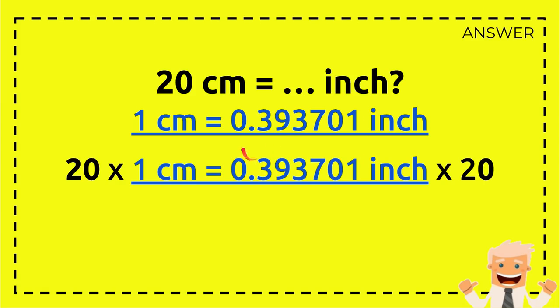To solve this problem, first you need to write the formula. So, this is exactly the same: 1 centimeter equals 0.393701 inch. And then you multiply 1 centimeter with 20, and this number in inches with 20 as well. Why?